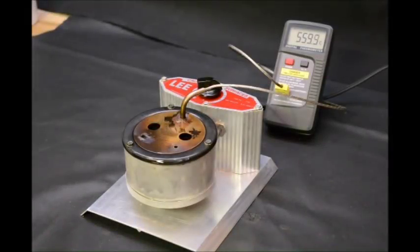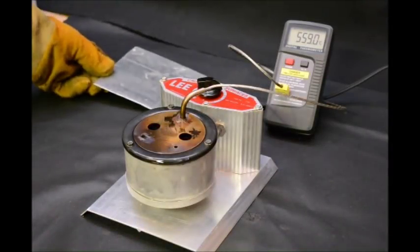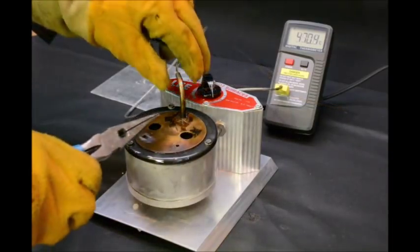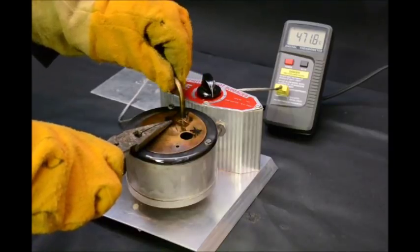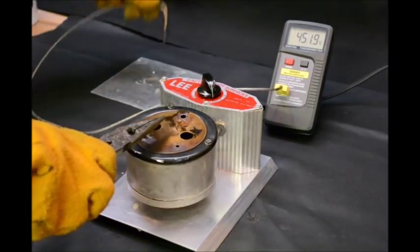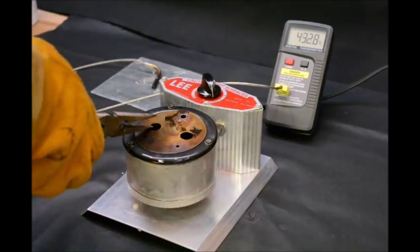When finished with your annealing session, first prepare a safe place to put the hot components as they are removed from the pot. Remove the thermocouple from the case holder before it has a chance to cool, otherwise it becomes extremely difficult to move. Next, remove the case holder and shake off any excess salt.